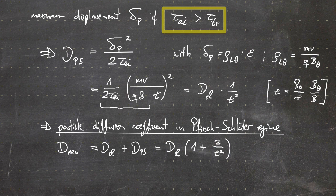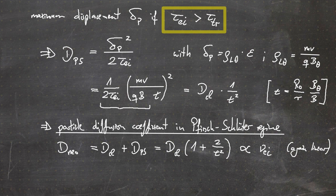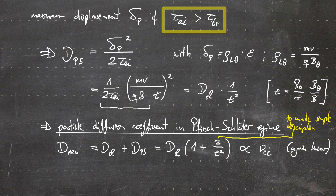This factor of two is included to make our simple description agree with the literature value — that is, with a rigorously derived diffusion coefficient. D_neo is proportional to the collision frequency since the classical diffusion coefficient is proportional to the collision frequency, meaning we have again a linear scaling.